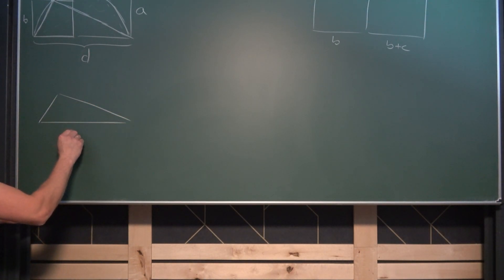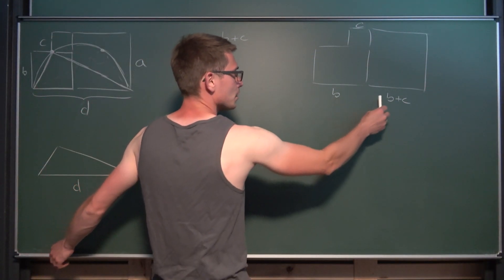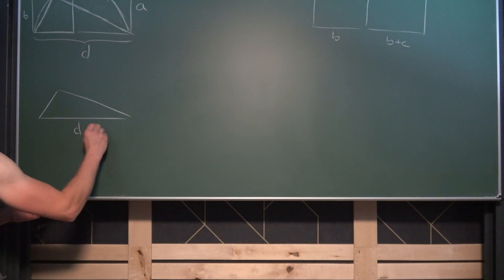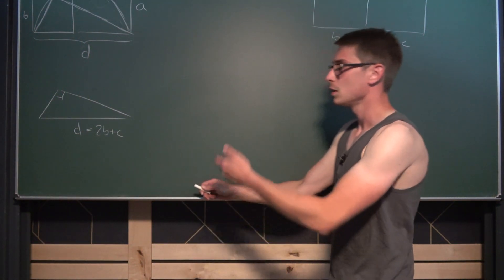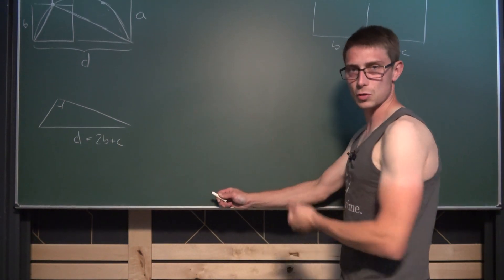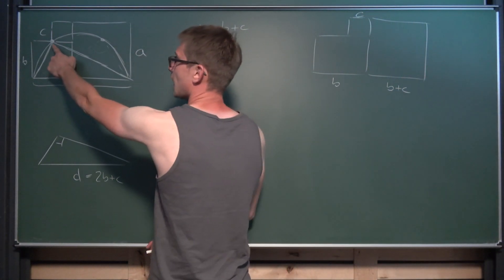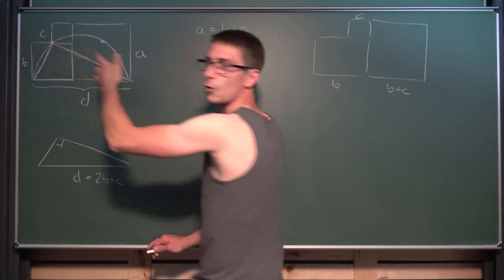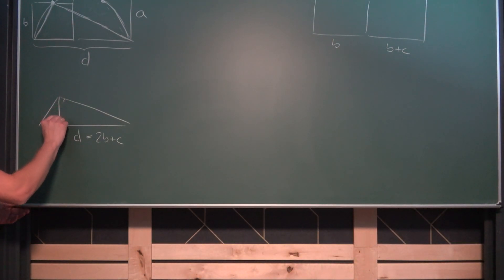So this right here is the diameter D and the diameter D is comprised of B plus B plus C, which is same as 2B plus C. That's the right triangle. And what can we do with this construction? Now what we can do is we can see that if we put a height into this right triangle, the height is going to be equal to the side length of the second square, the middle square B. So putting a height in here is going to yield once again B.